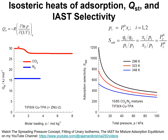The QST for CO2 and nitrogen derived from the isotherm fits are shown here — red for CO2, blue for nitrogen. The same isotherm fits can be used to determine the adsorption selectivity using the ideal adsorption solution theory.